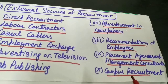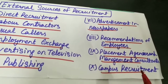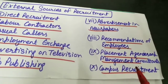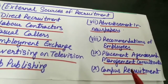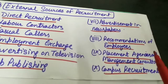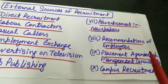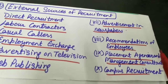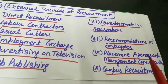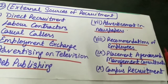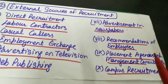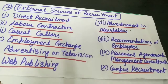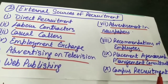Last source of recruitment from outside the organization is campus recruitment, jis ko hum educational institutions ke naam se bhi jaante hain. Jo colleges aur institutes hain management ke aur technology ke, they have become a popular source of recruitment for technical, professional and managerial jobs. Badi companies jo hain, woh close links rakhti hain with them so that they can recruit qualified personnel. Companies basically conduct certain interviews in educational institutions and shortlist these candidates. For example, companies visit institutes like IIT, IIM for campus recruitment.